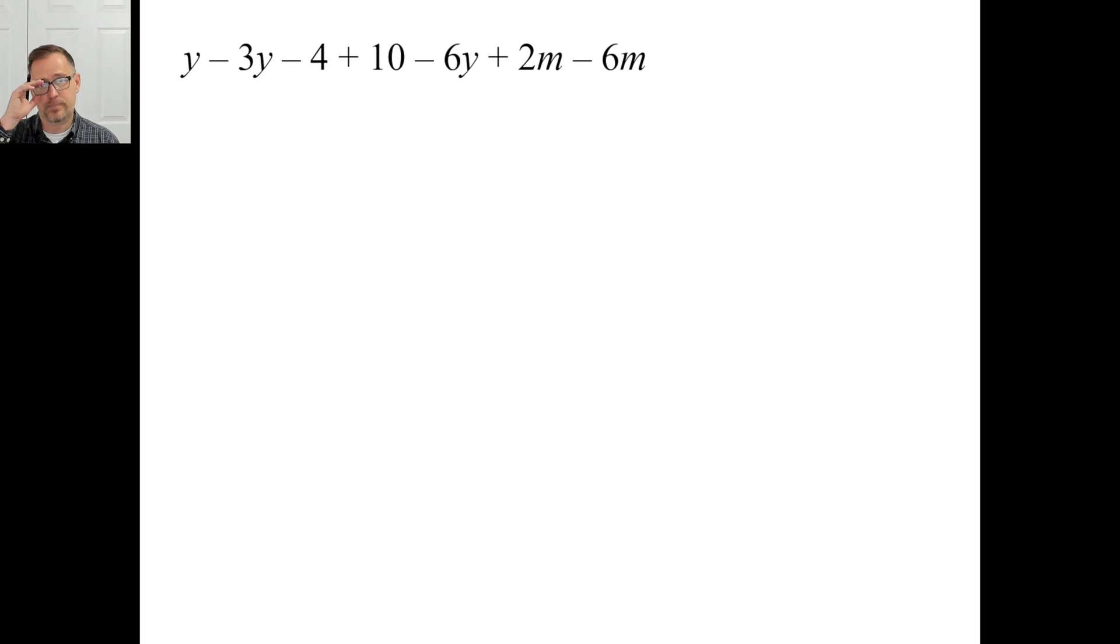Try b. Let's do it again. I want to put a 1 there just to remind myself there's a 1y. 1y, negative 3y, and negative 6y. So 1 minus 3 is negative 2. Negative 2 minus 6 is negative 8y. Gone, gone, and gone. Negative 4 plus 10. That's going to be 6. And a 2 minus a 6 is negative 4n. There we go. That's all you can do. Pause it and try C.